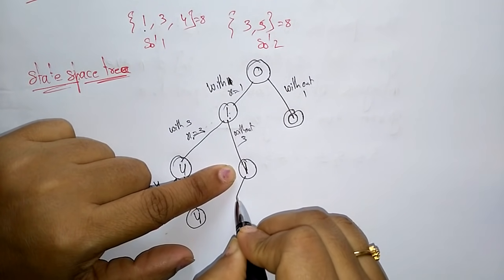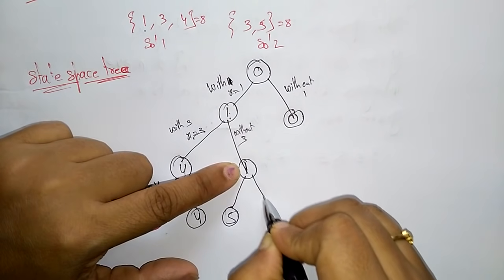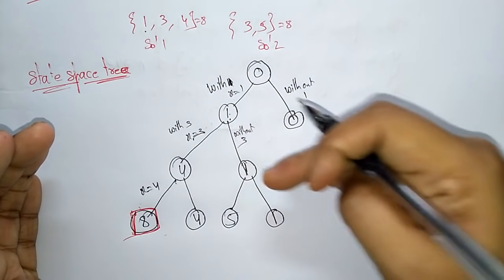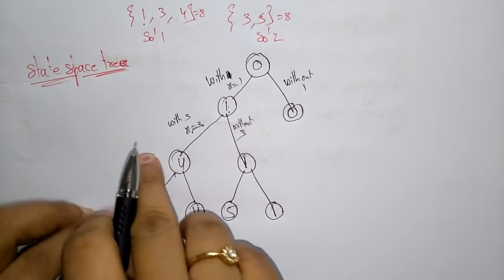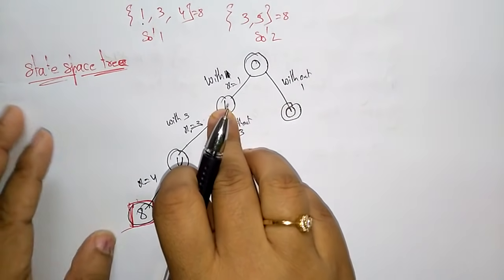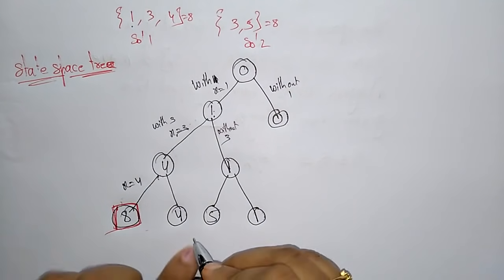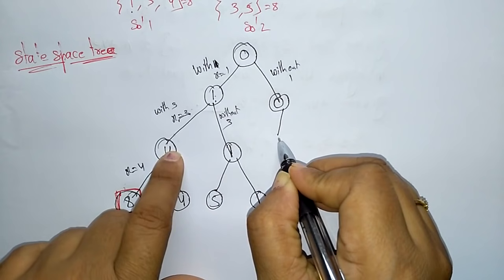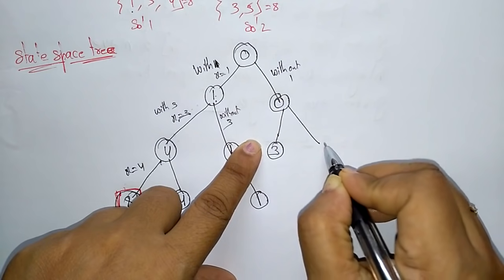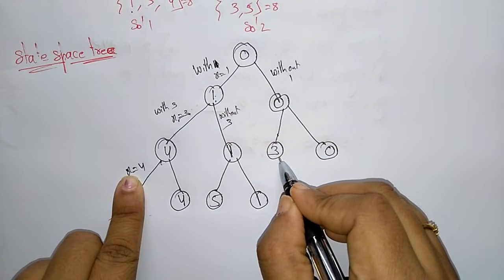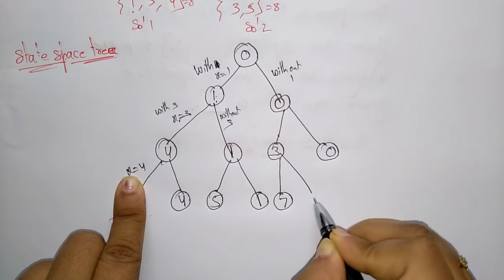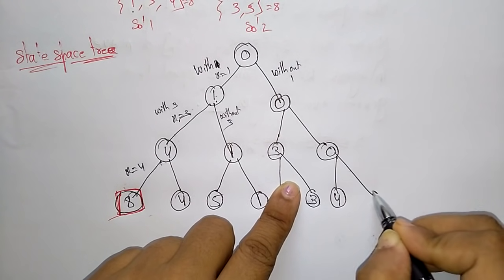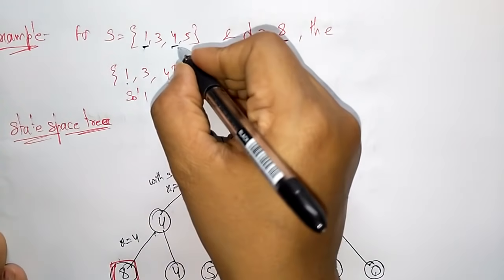For the node with 4: 4 + 1 = 5, and without 4 just copy 1. For the branch with 3: zero + 3 = 3, and without 3 just copy zero. Then with 4: 4 + 3 = 7, and without 4 just copy 3. For the rightmost branch: zero + 4 = 4, and without 4 just copy zero. Now up to 4, all four elements are processed, and we need to add 5.